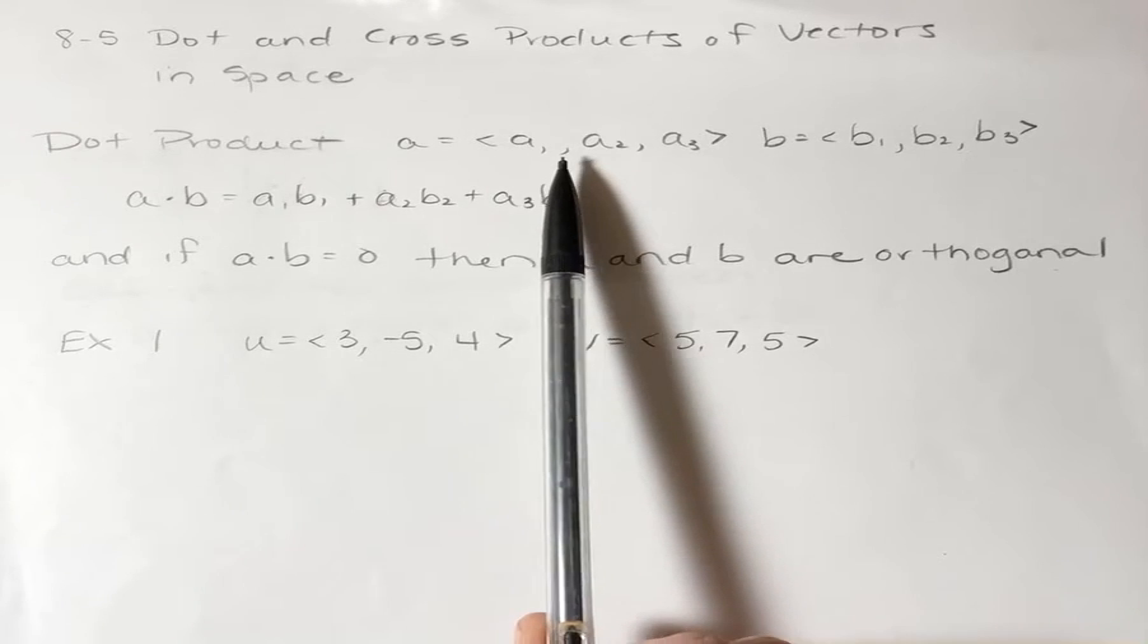So we have a vector in three-dimensional space: a sub 1, a sub 2, a sub 3, and another vector: b sub 1, b sub 2, b sub 3.